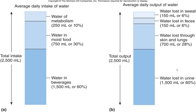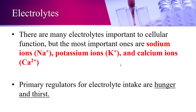Here is an illustration comparing water intake and output for an average adult — around 2,500 milliliters or two and a half liters. Water from beverages is about 60% of intake, moist foods about 30%, and water of metabolism the last 10%. For output, the majority is through urine at about 60%, water loss through evaporation and exhalation from the lungs about 28%, and feces and sweat about 6%.